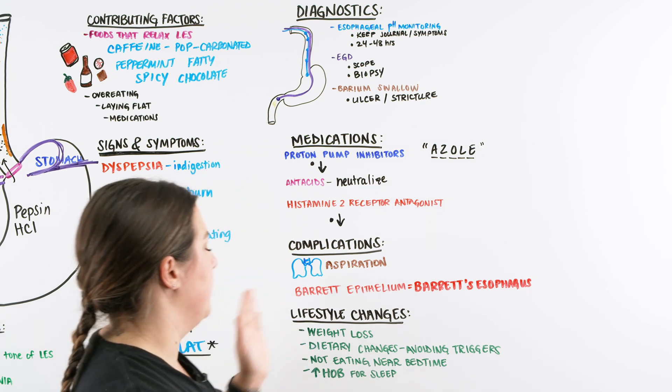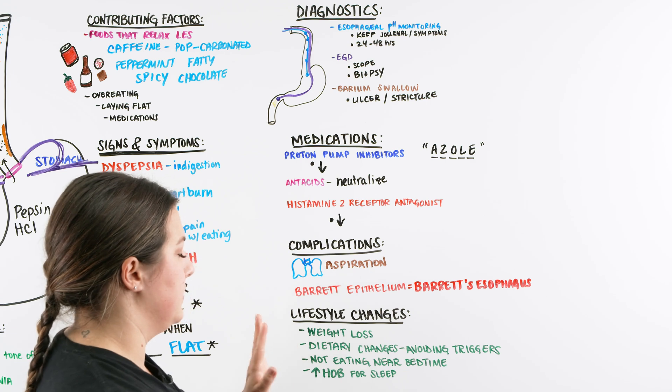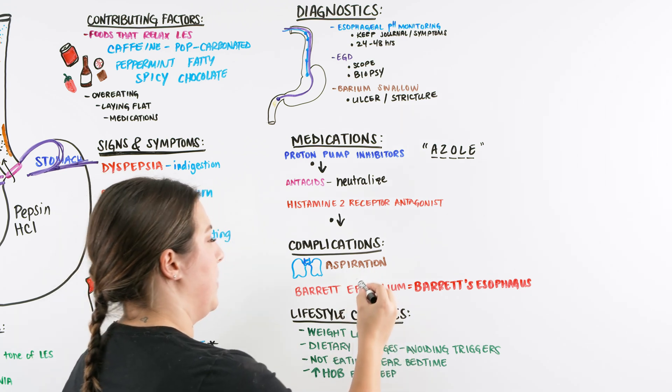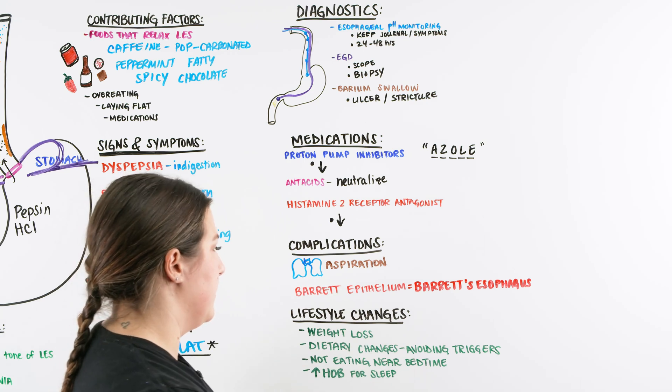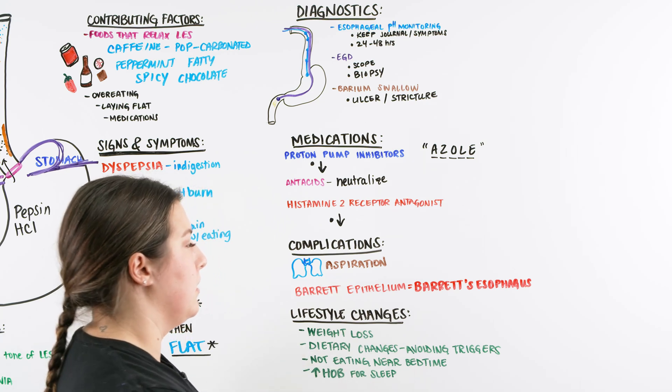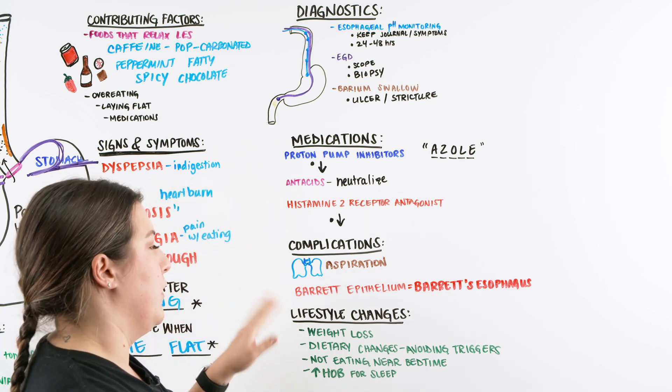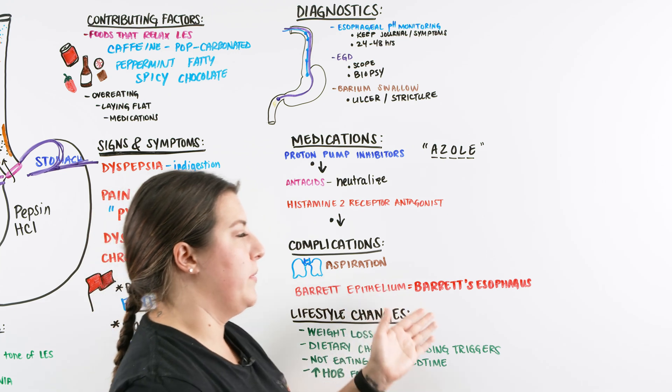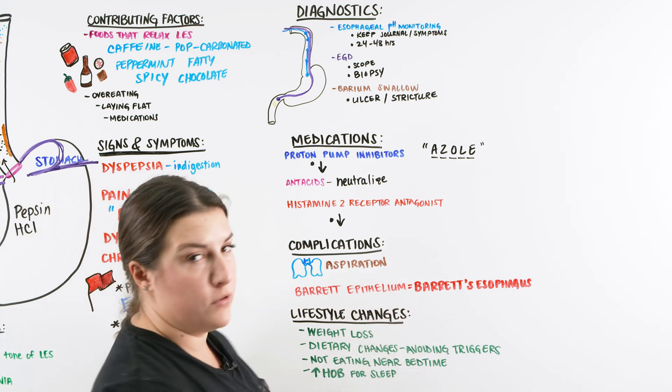Now let's quickly just talk about the complications that our patients can have. One of them would be aspiration of these secretions. So what would happen is it would go so far up into the esophagus that it could eventually get down into the lungs a little bit, causing that chronic cough or any type of asthma exacerbation, which we wouldn't want. And also the development of a Barrett's epithelium, which is our Barrett's esophagus, where they're going to have some issues with swallowing, other issues with taking food in as well.